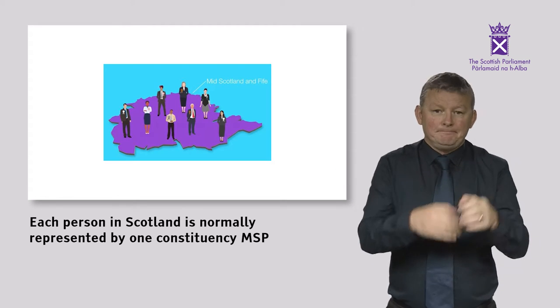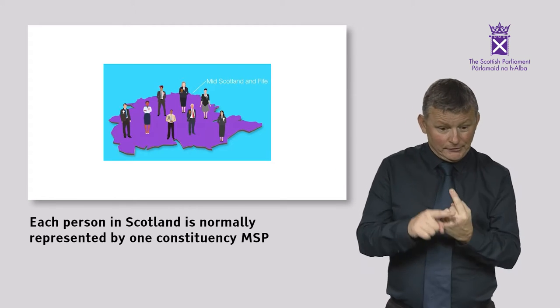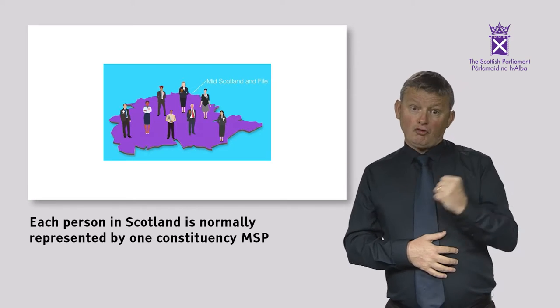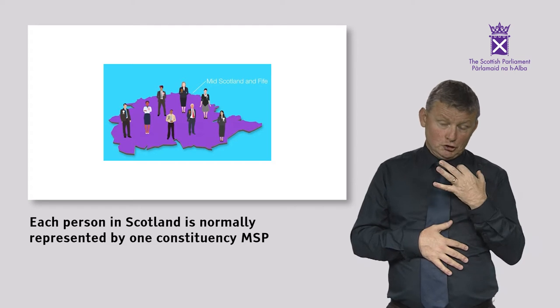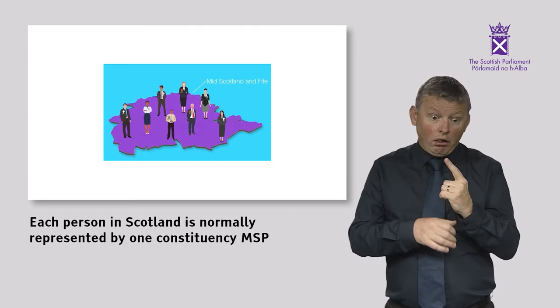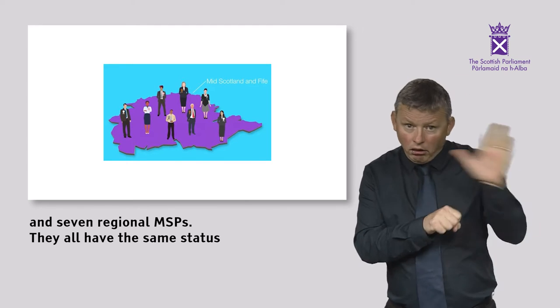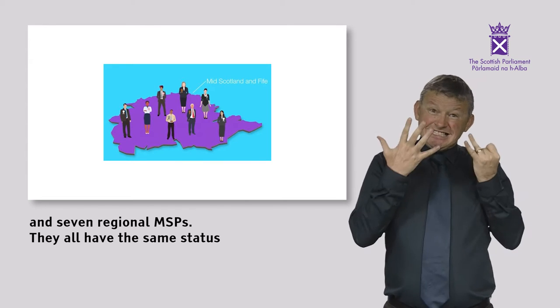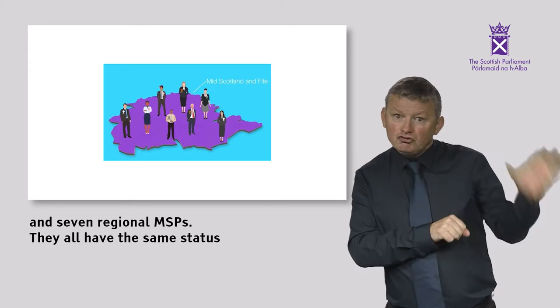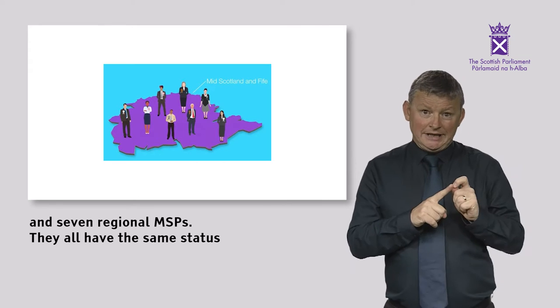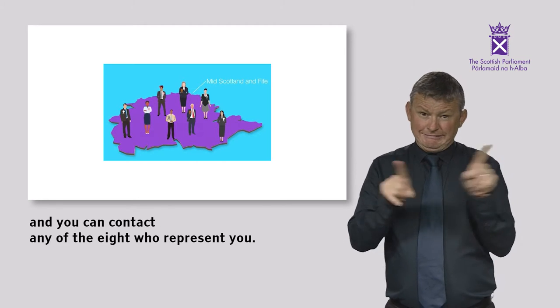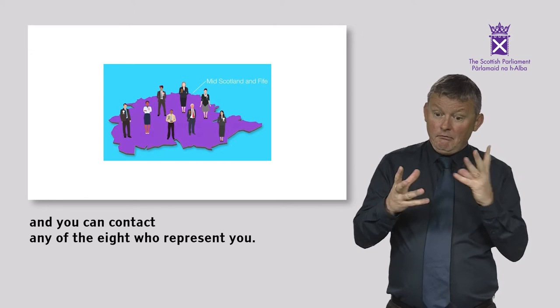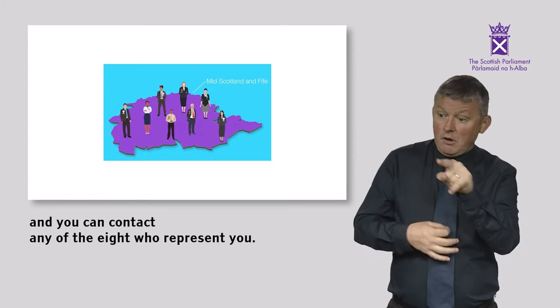Each person in Scotland is normally represented by one constituency MSP and seven regional MSPs. They all have the same status and you can contact any of the eight who represent you.